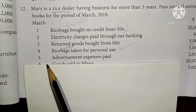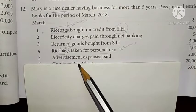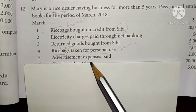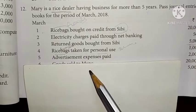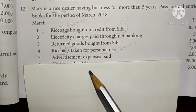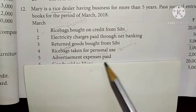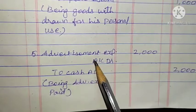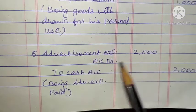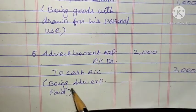Date 5: Advertisement expenses paid, 2,000. Advertisement expenses are expenses — debit the expenses 2,000. To cash account 2,000. Being advertisement expenses paid.